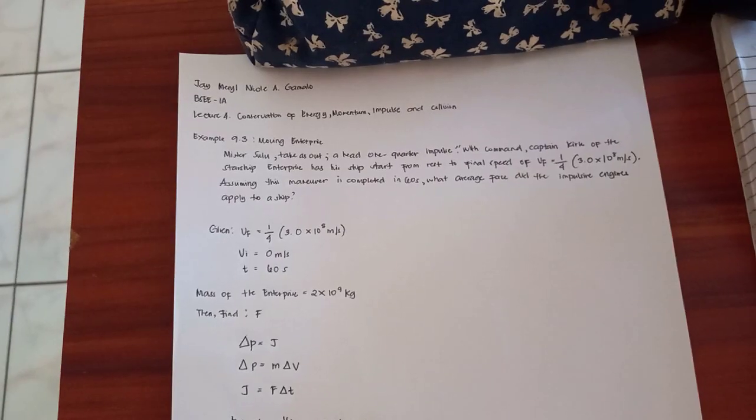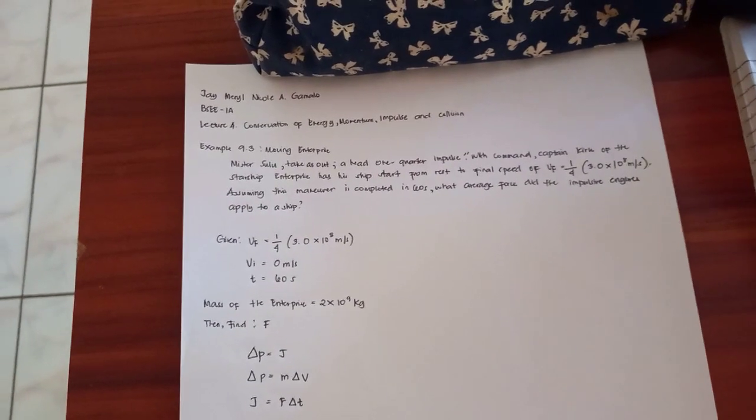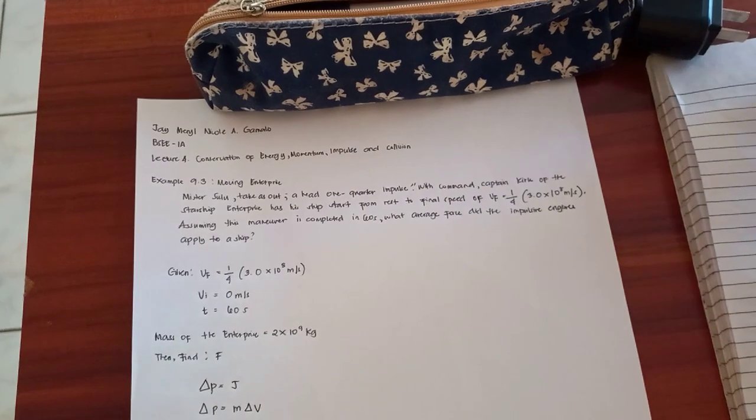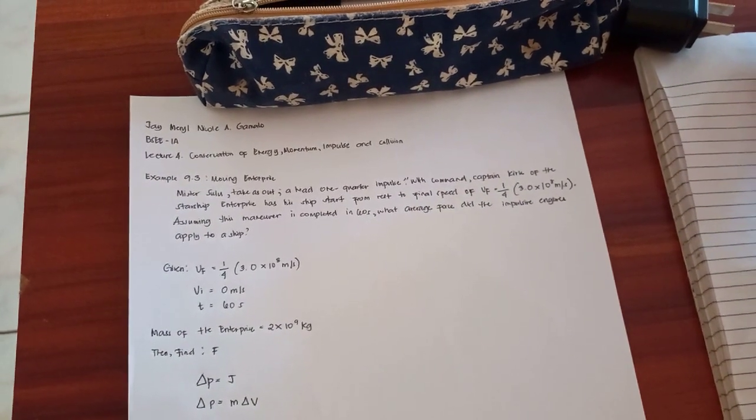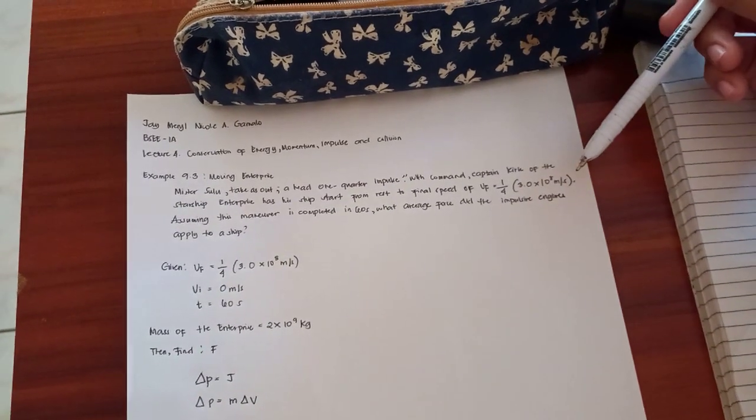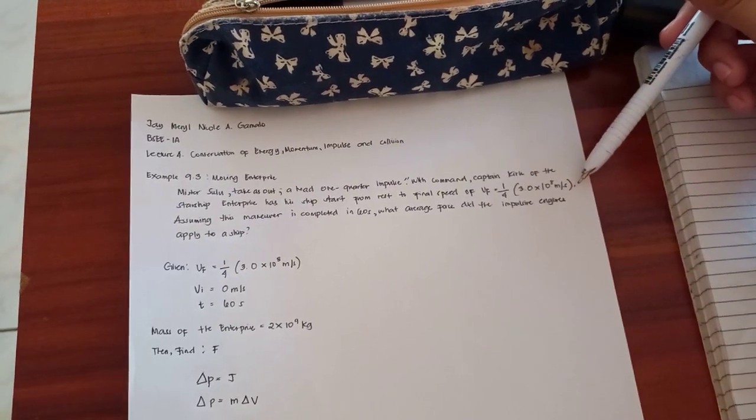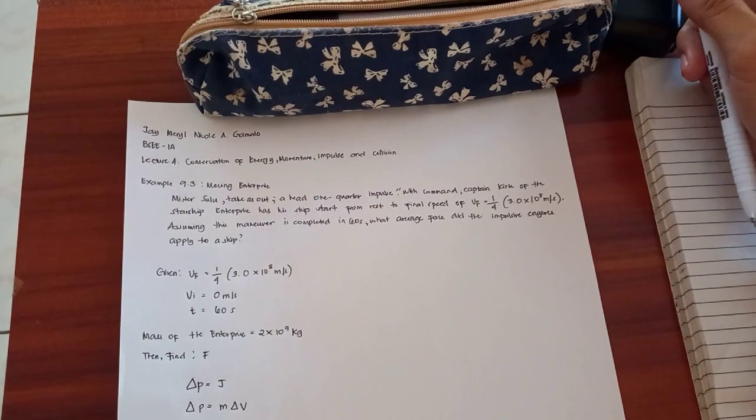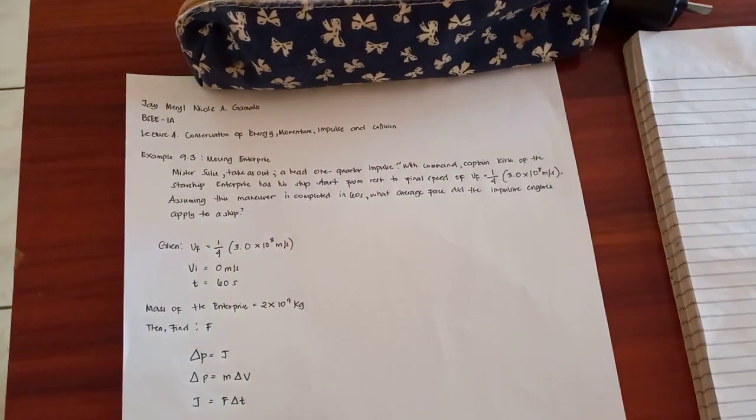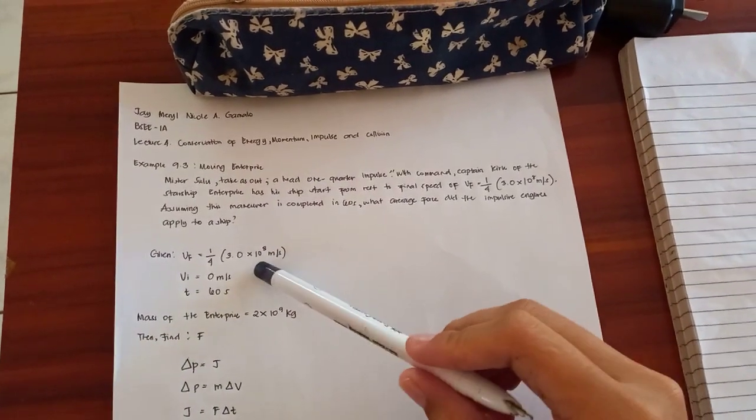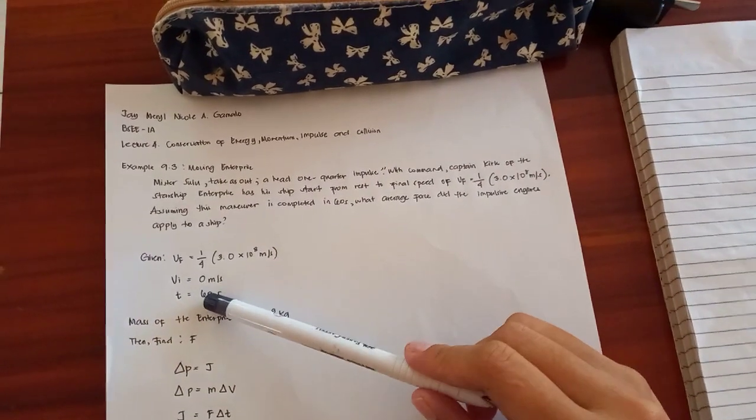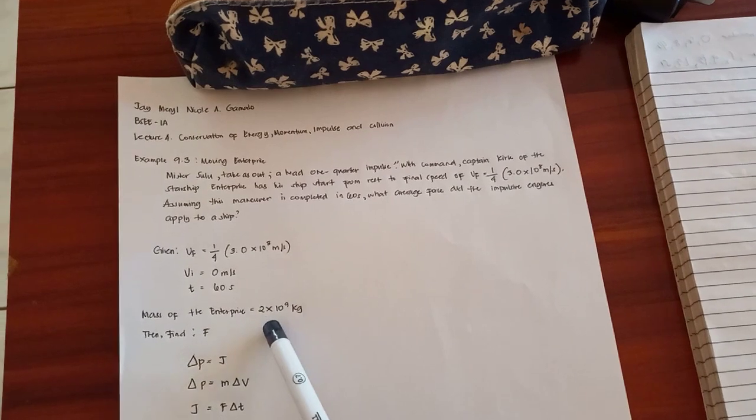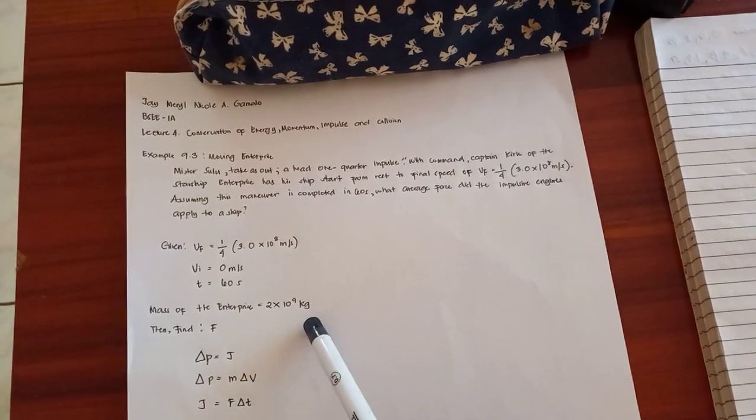Problem set number four in example 9.3: Mr. Sulu, take us out. Ahead one-quarter impulse. With this command, Captain Kirk of the starship Enterprise has the ship start from rest to final speed of one-fourth times 3.0 times 10 to the eighth power meters per second, assuming this maneuver is completed in 60 seconds. What average force did the impulse engines apply to the ship? The final speed equals one-fourth times 3.0 times 10 to the eighth power meters per second. Vi equals 0 meters per second, and the time is 60 seconds. Find F.